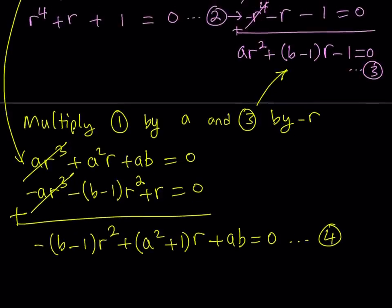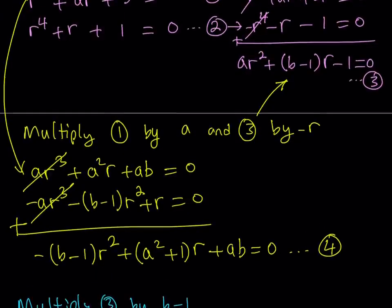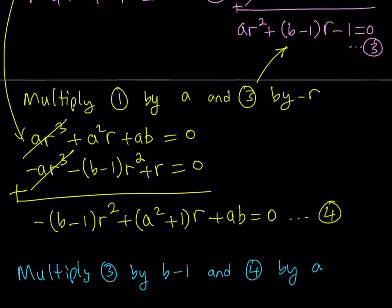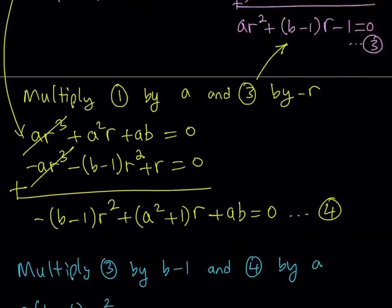In equation three I have A times R squared, and in equation four I have negative (B minus one) times R squared. My goal is to get rid of R squared so I can end up with a linear equation. I can multiply number three by (B minus one) and number four by A, then add those two equations. So let's multiply equation number three by (B minus one). That gives me A(B minus one) R squared, and then (B minus one) squared times R, and minus (B minus one) equals zero.